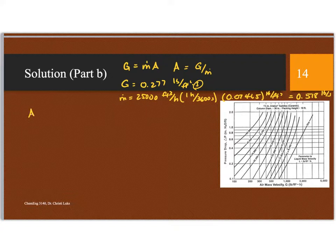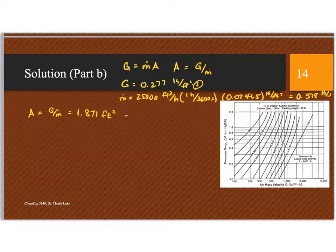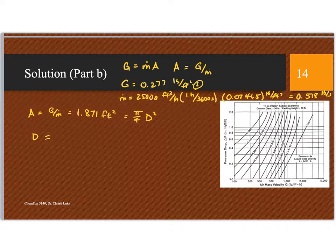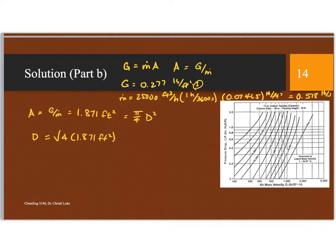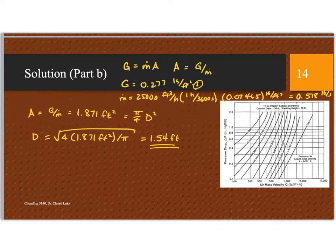So the area is G over M, or 1.871 square feet. This is pi over 4 d squared. d therefore is 4 times 1.871 feet squared, divided by pi, square root of all that. And so my diameter needs to be 1 and a half feet.